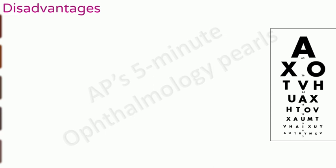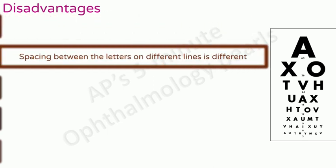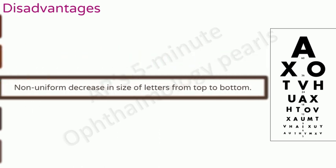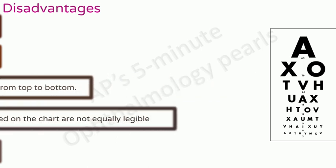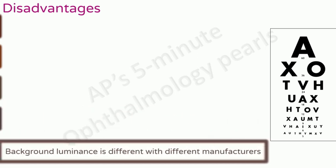Despite being popular in clinical practice, the Snellen chart has some disadvantages. The number of optotypes on each line is different. Spacing between the letters on different lines is also different. There is a non-uniform decrease in size of letters from top to bottom. All the letters used on the chart are not equally legible and finally the background luminance is different with different manufacturers.